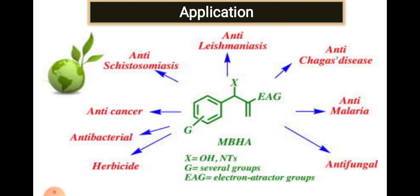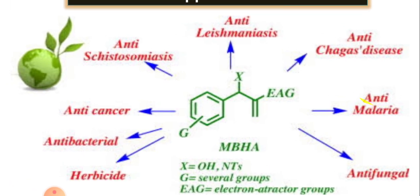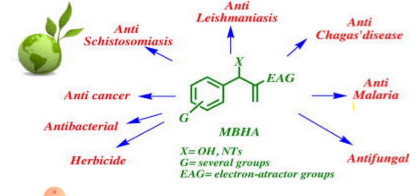There are lots of applications of the product. G refers to several donating groups, X is a hydroxy group, O, or NTS, and EAG refers to electron-activating groups. Applications include anti-malarial, anti-fungal, herbicides, antibacterial, anti-cancer, and more.